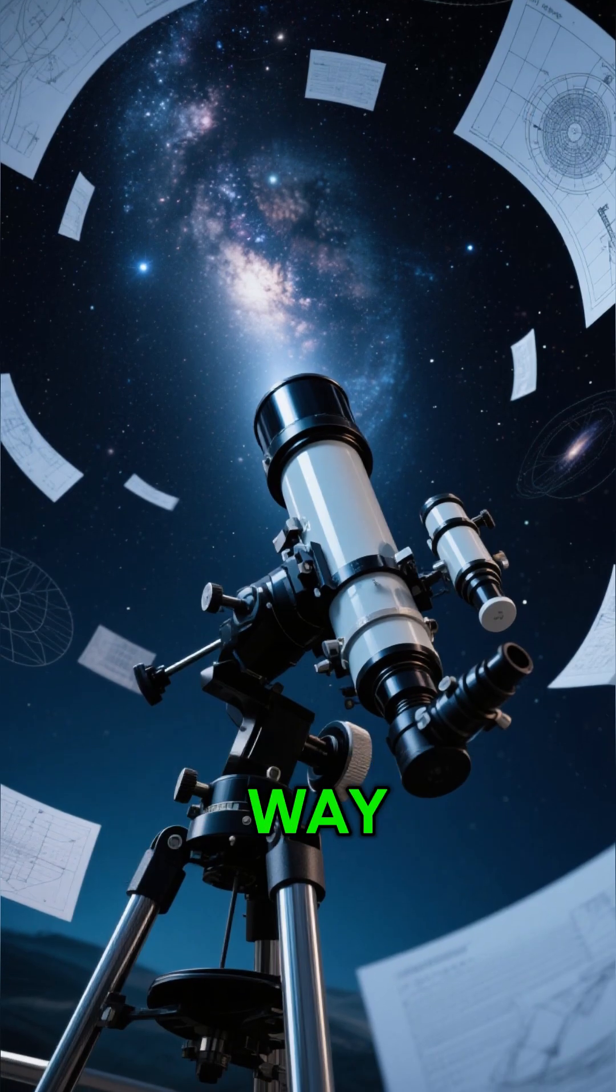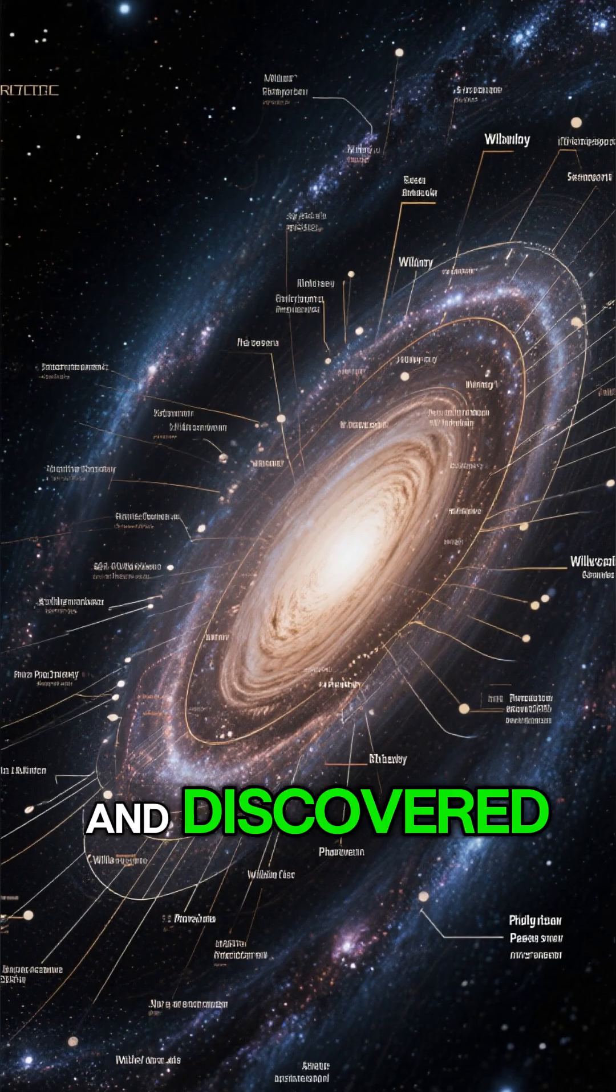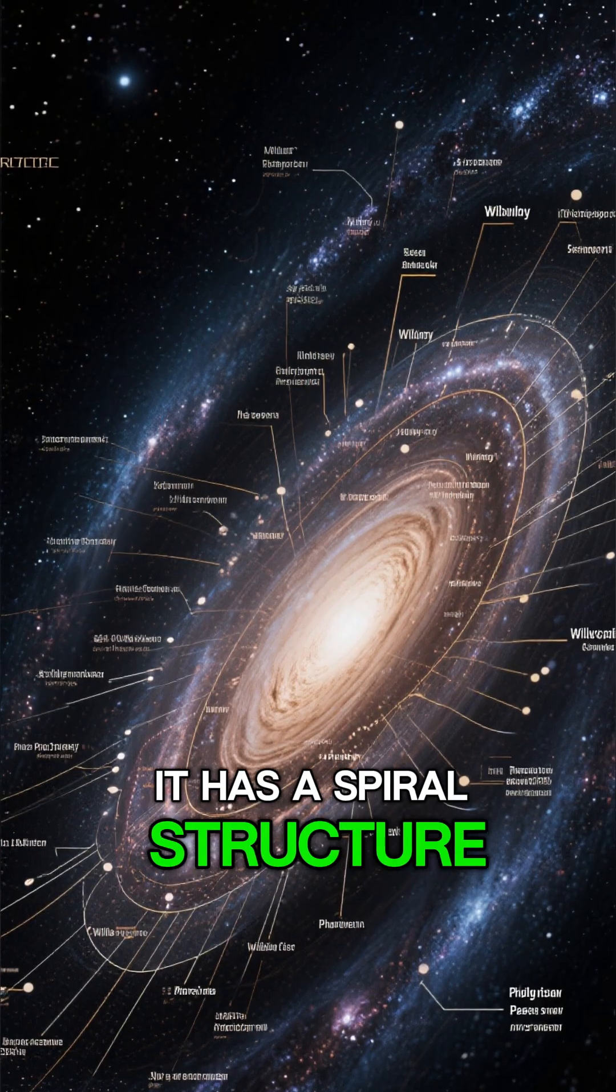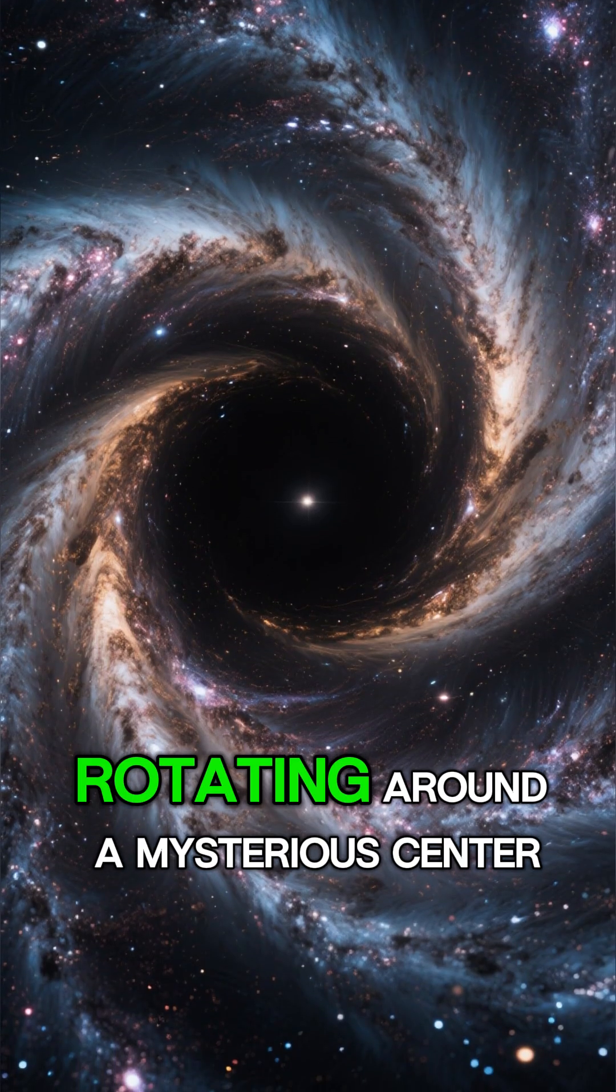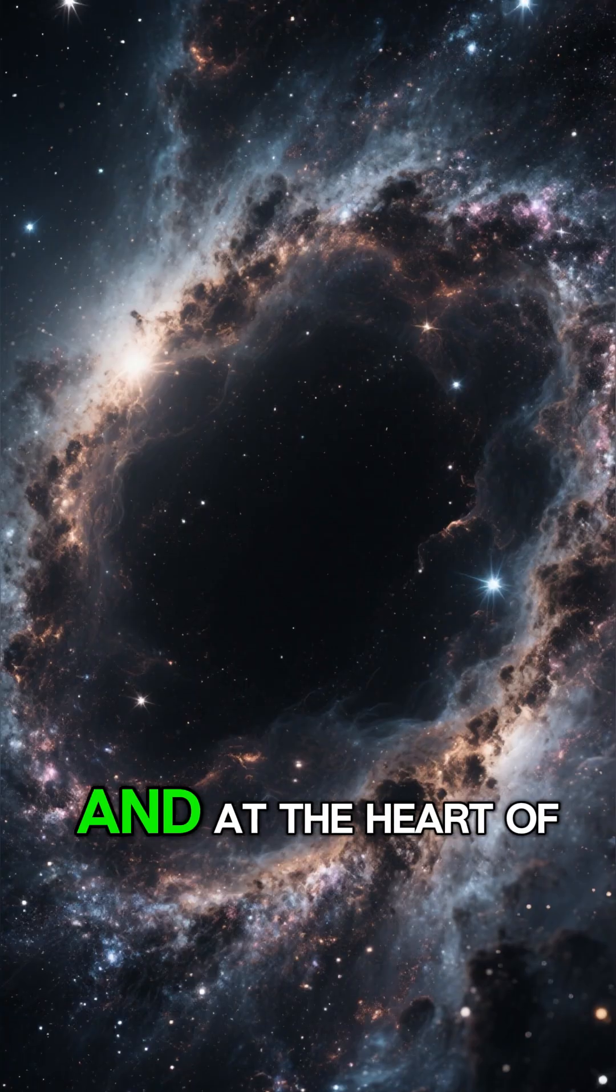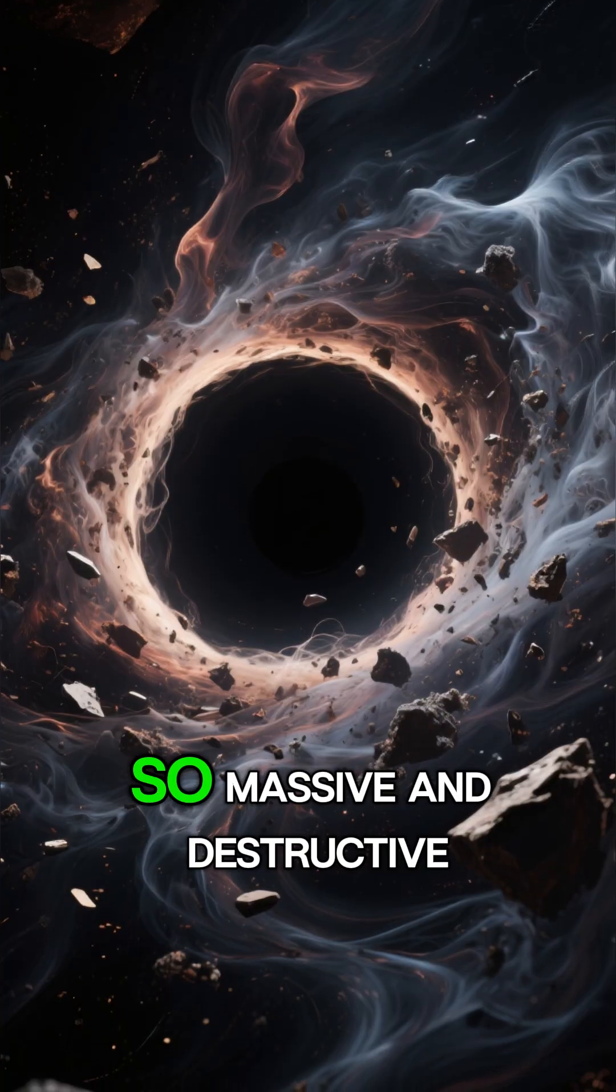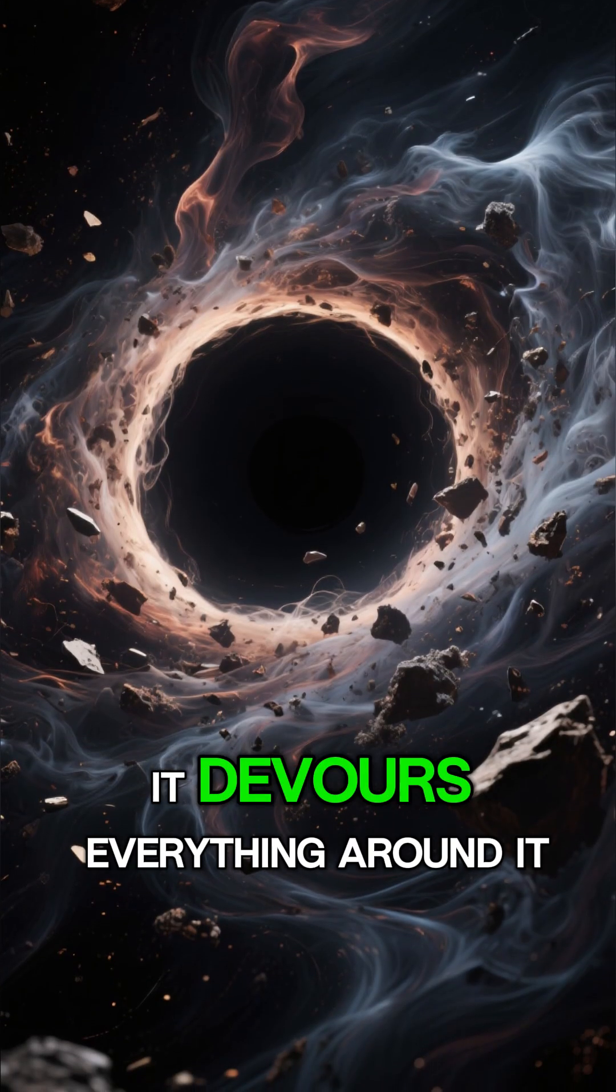Scientists have mapped the Milky Way using powerful telescopes and discovered it has a spiral structure, with giant arms slowly rotating around a mysterious center. And at the heart of that structure, there's something so massive and destructive it devours everything around it.